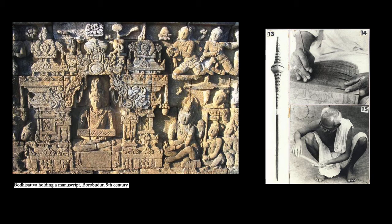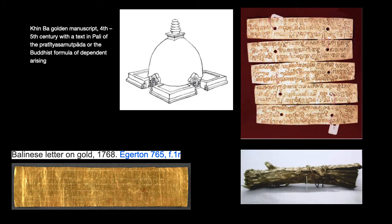The palm leaf manuscript was the chief format that helped circulate Buddhist knowledge across domains under the cultural influence of Buddhism. Because palm leaf manuscripts are not objects that last, they were often remediated in other mediums such as gold. On screen is a 4th or 5th century approximation in the form of the Khinba golden manuscript — a Buddhist formula centered on the doctrine of dependent arising, excavated from the relic chamber of the Khinba stupa in central Myanmar.